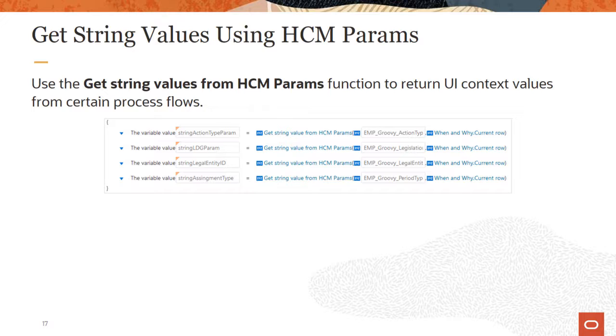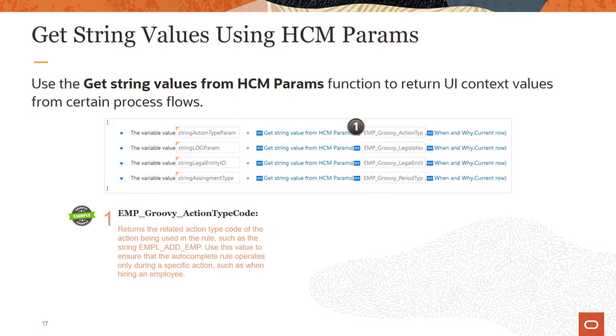For example the function shown here passed the following HCM params. Emp Groovy action type code. This returns the related action type code of the action being used in the rule, for example such as the string employee add employee. Emple add emp is the code for the hire an employee action. You can use this value to ensure that the autocomplete rule operates only during a specific action such as when hiring an employee.